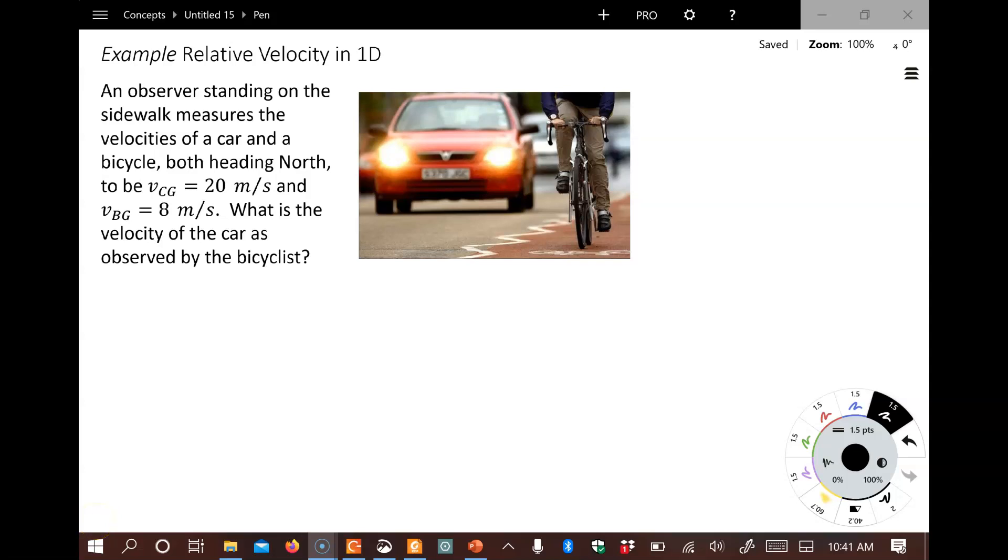Hi, this is an example problem from section 3.4 in the textbook on relative velocity. Relative velocity has to do with who is making a measurement of an object's velocity. Pause this for a second and go ahead and read this problem.